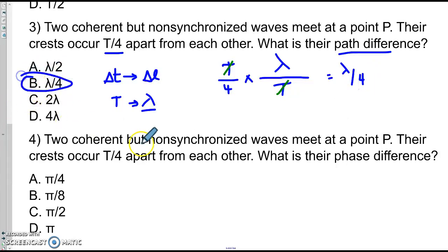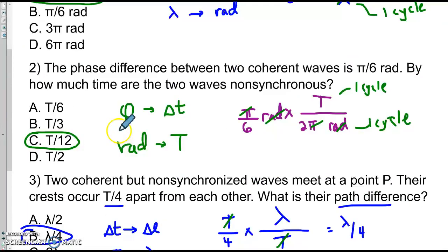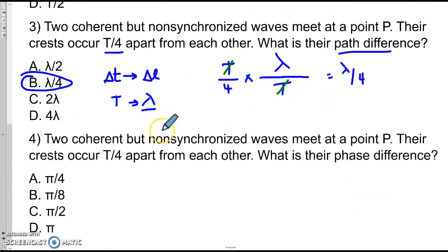That's choice B. Are all these B? Oh. So far, that's the only one. Okay, finally, two coherent but non-synchronized waves meet at point P. The crests occur T over 4 apart. What's their phase difference? Oh, it's the same thing, but now instead of going to path difference, we're going to phase difference. We're converting from some number of periods into some number of radians.